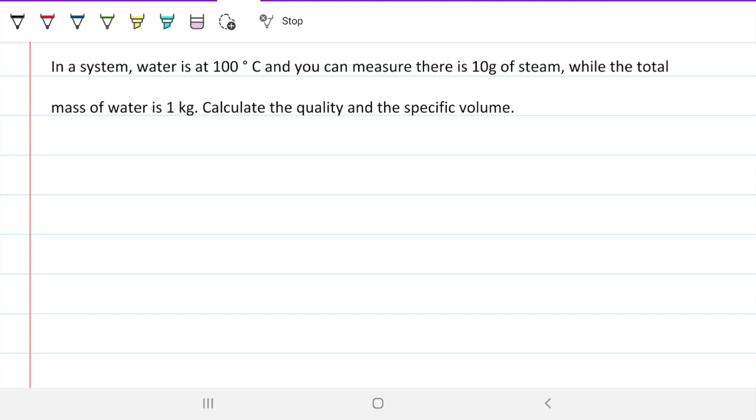Problem statement: In a system, water is at 100°C and you can measure there is 10 grams of steam, while the total mass of water is 1 kilogram. Calculate the quality and the specific volume.